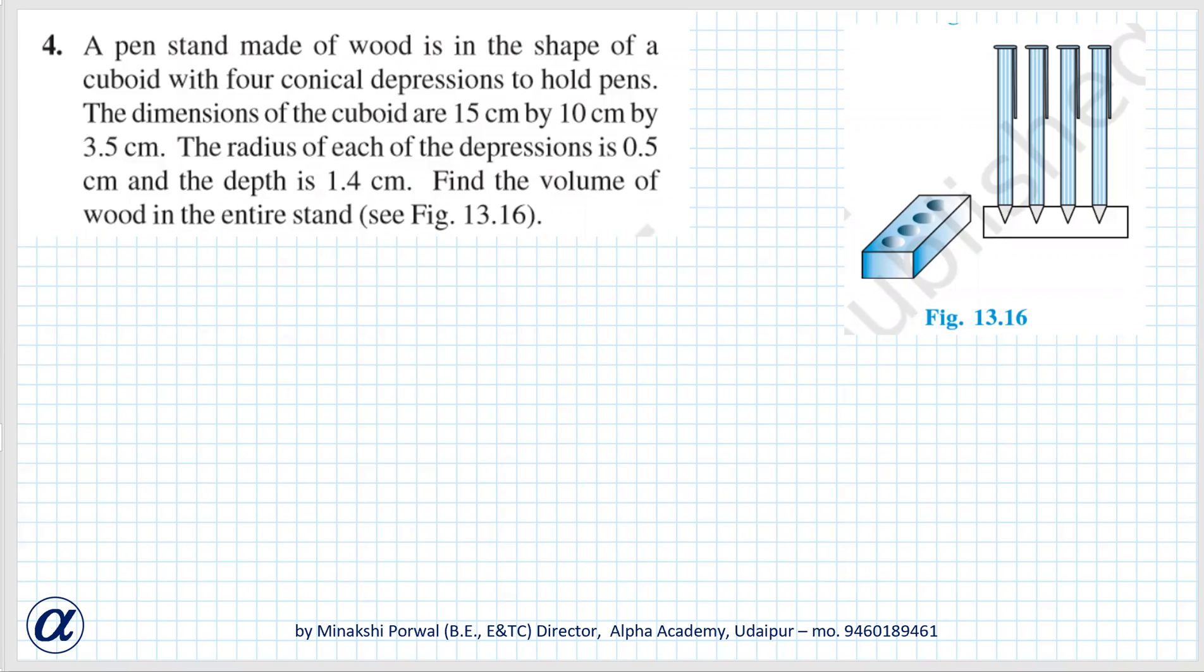The dimensions of the cuboid are 15 cm by 10 cm by 3.5 cm. The radius of each of the depressions is 0.5 cm and the depth is 1.4 cm. Find the volume of wood in the entire stand.